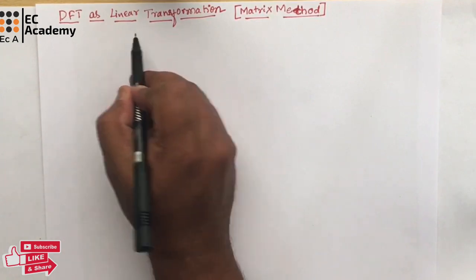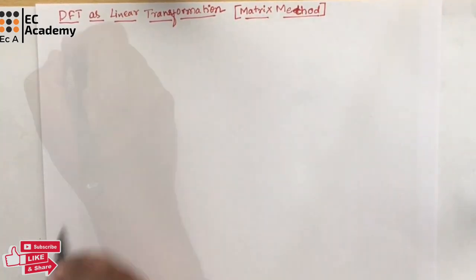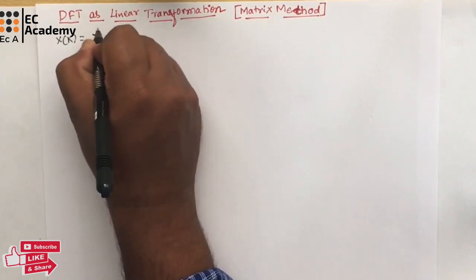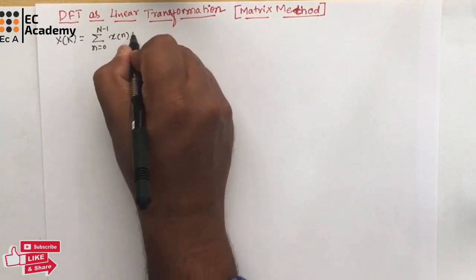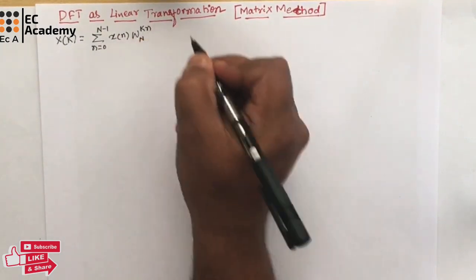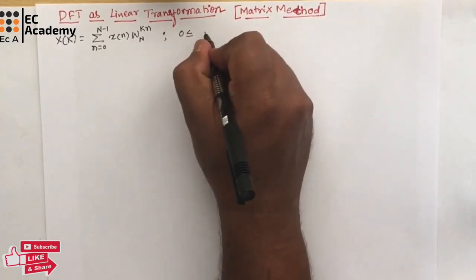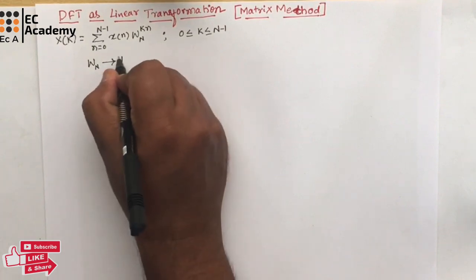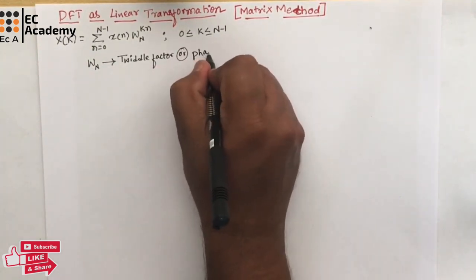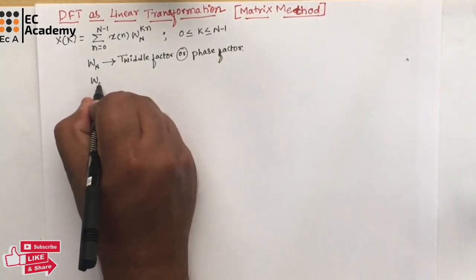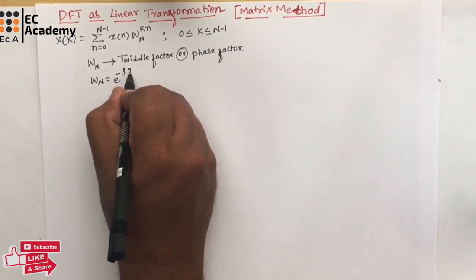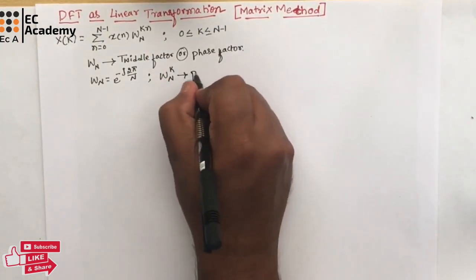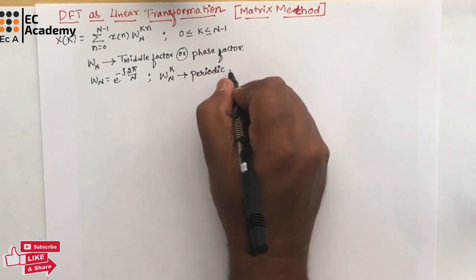let us understand DFT as a linear transformation, which is also known as the matrix method. We know DFT can be written as X(k) = summation from n=0 to N-1 of x(n) * W_N^(kn), where k ranges from 0 to N-1. Here, W_N is known as the twiddle factor or phase factor, where W_N = e^(-j2π/N). Note that W_N^k is periodic with period N.